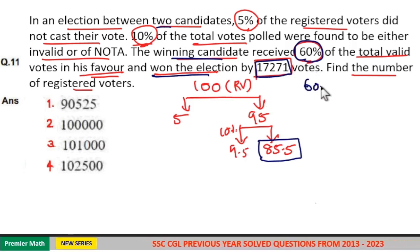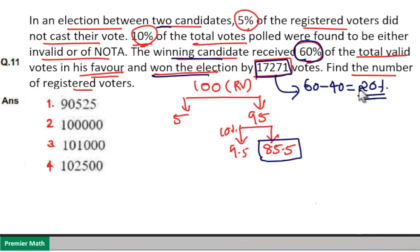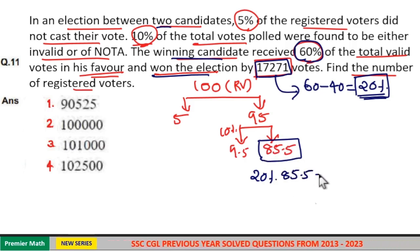60 minus 40. The difference is 20%. That is he won by this difference. He won by 20%. So 20% of total valid votes is 85.5 which is equal to 17,271.